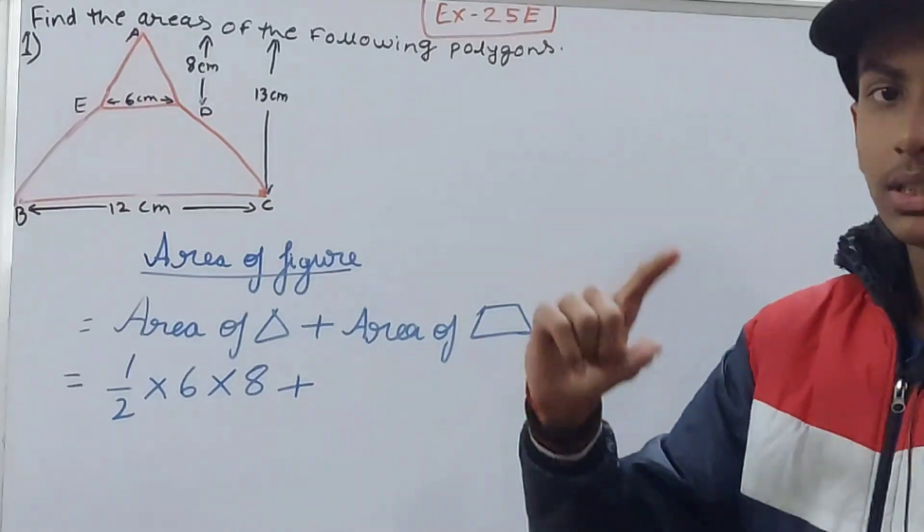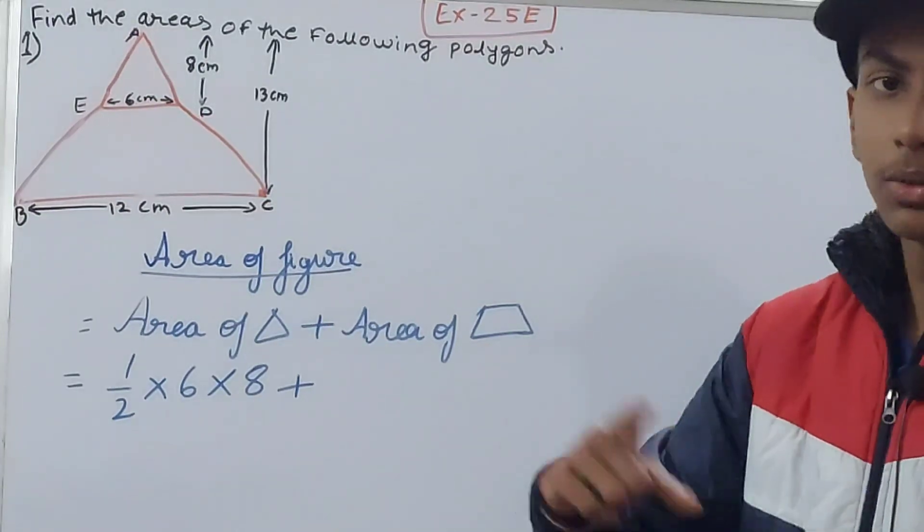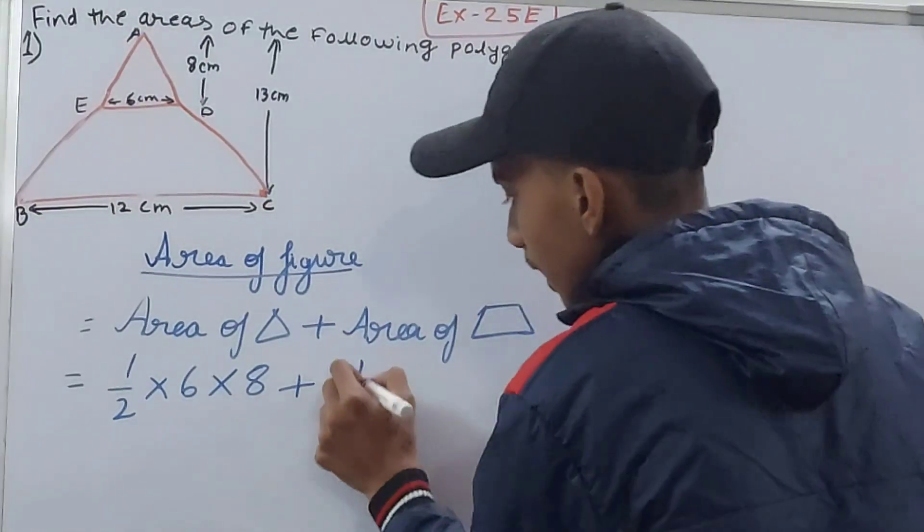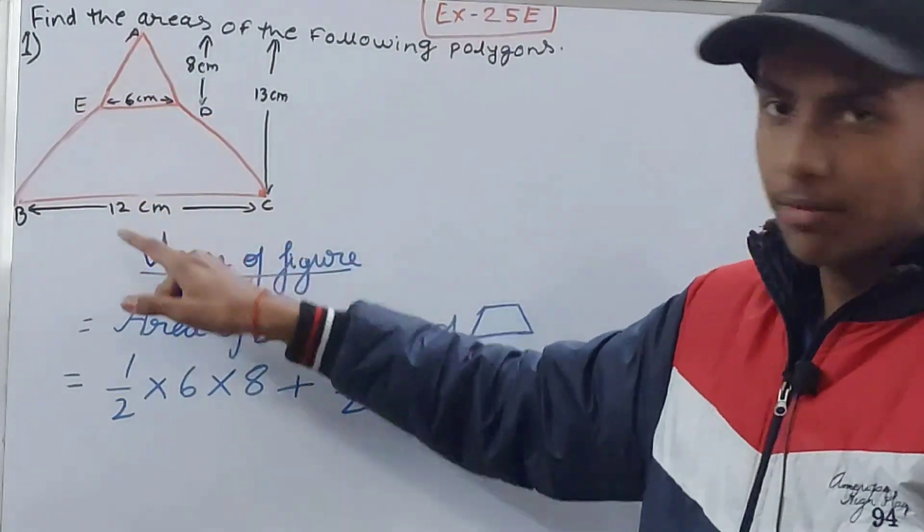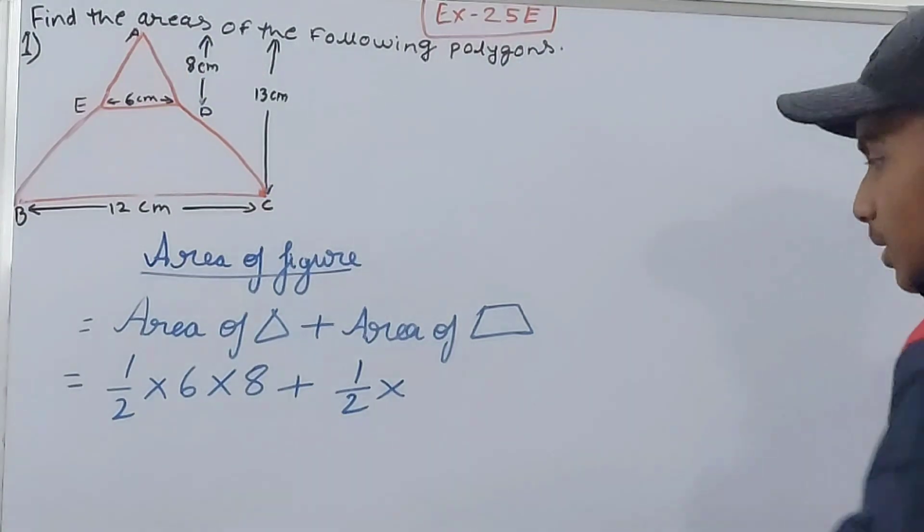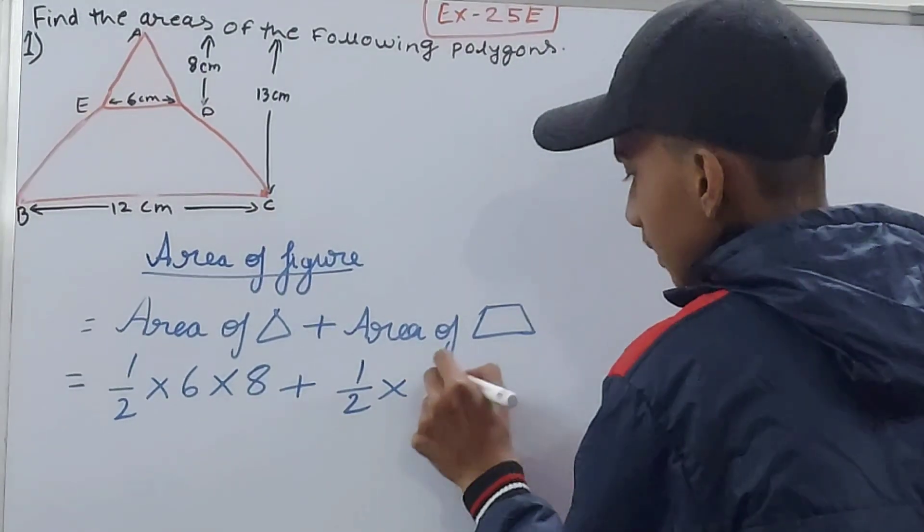Here again it is half into the sum of the parallel sides into height. So again half into, now sum of parallel sides: 6 and 12 are the parallel sides of the trapezium, so this will become 18 into...